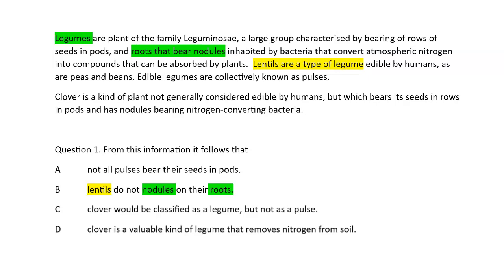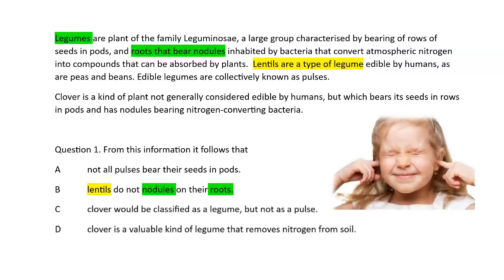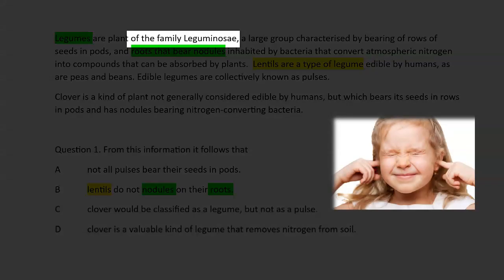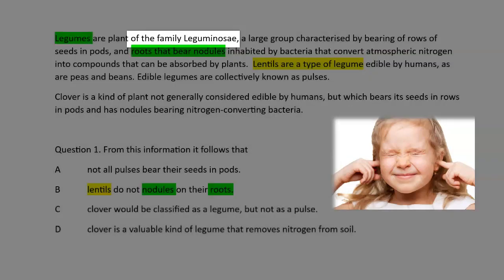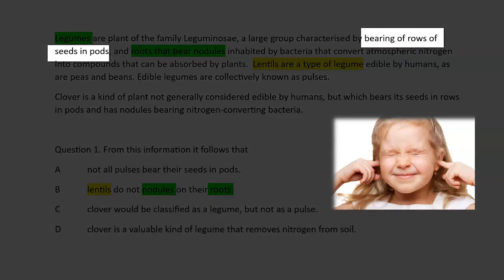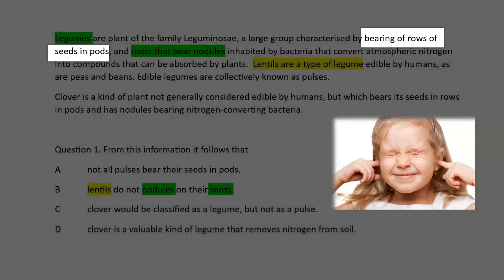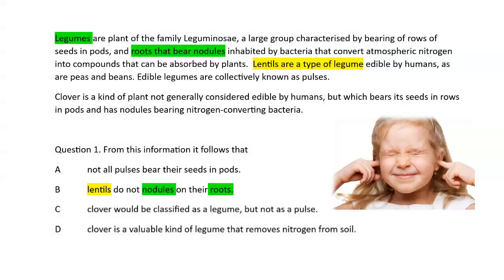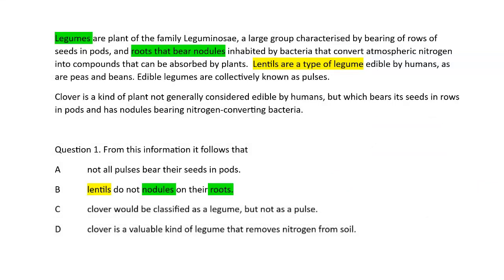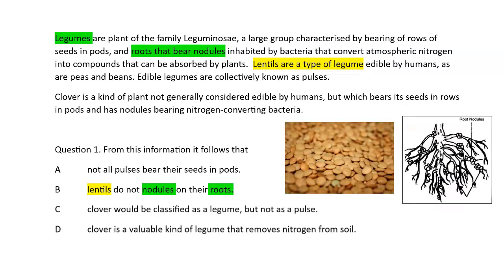So let's say with statement B, we're trying to figure out if lentils have roots or nodules, essentially. Do they have them or not? Well, does it really matter that legumes are from the family leguminosae, for example, or the fact that they bear rows of seeds? Are we interested in that in terms of trying to solve or prove whether or not statement B is correct? No. We're only interested in whether or not lentils have nodules and roots.